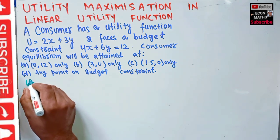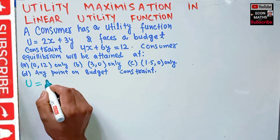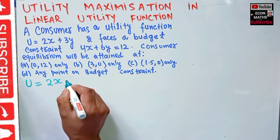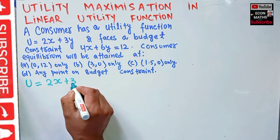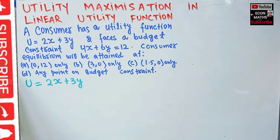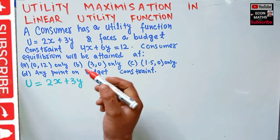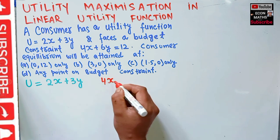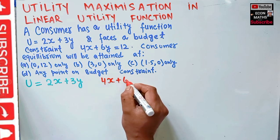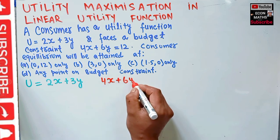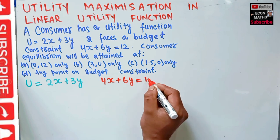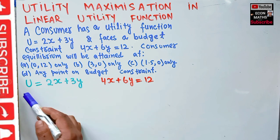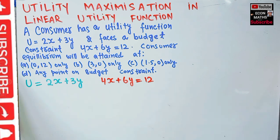The utility function of a consumer is given as U = 2x + 3y, which is a linear one. The budget constraint is: price of good x, which is 4, times units of good x, plus price of good y, which is 6, times units of good y, equals 12. 12 denotes the income of the consumer. This is our utility function and this is our budget constraint.